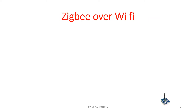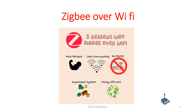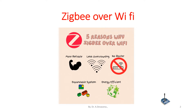Here is a comparison between ZigBee and Wi-Fi. There are five reasons to select ZigBee over Wi-Fi: first, ZigBee is an expandable system; second, ZigBee is energy efficient; third, ZigBee is more reliable; fourth, less overcrowding compared to Wi-Fi; and fifth, ZigBee requires no router.